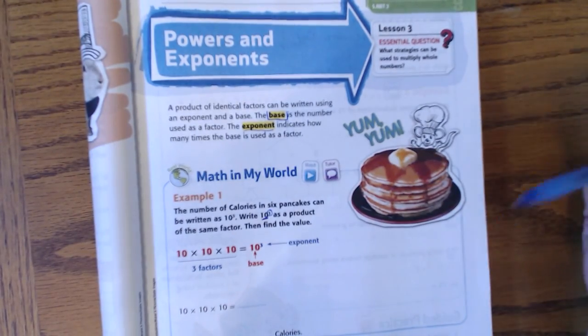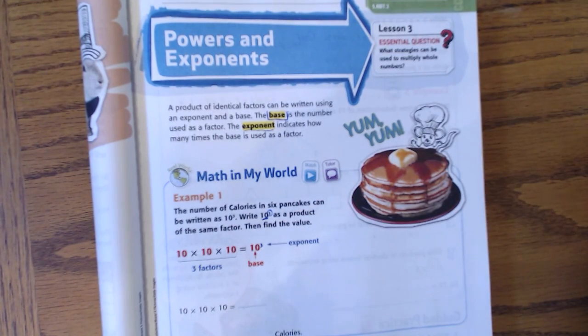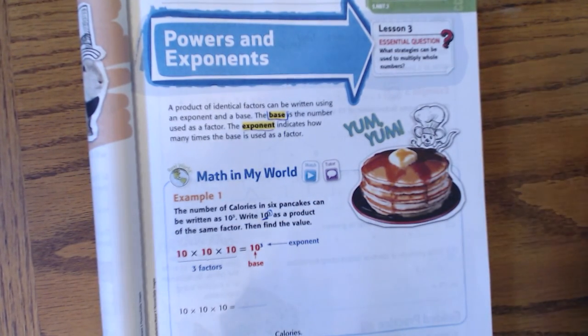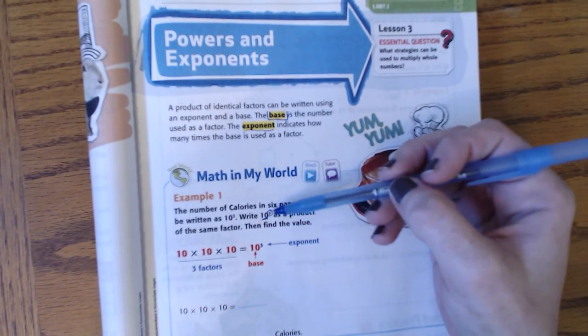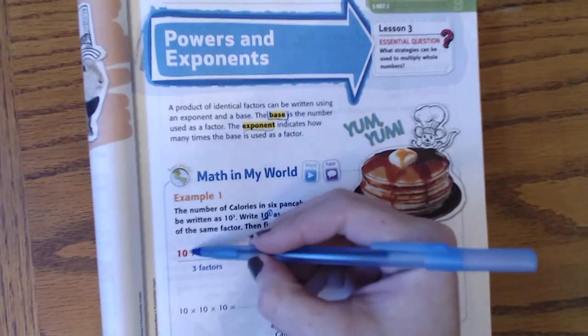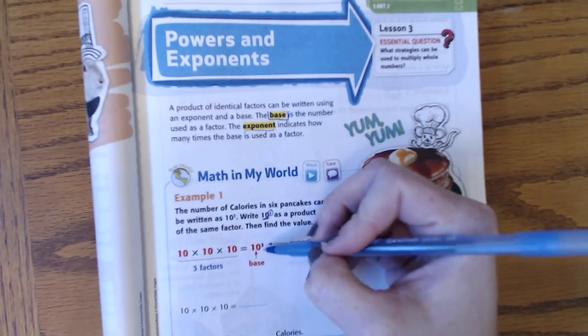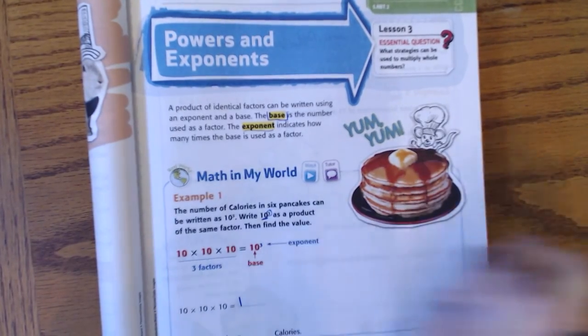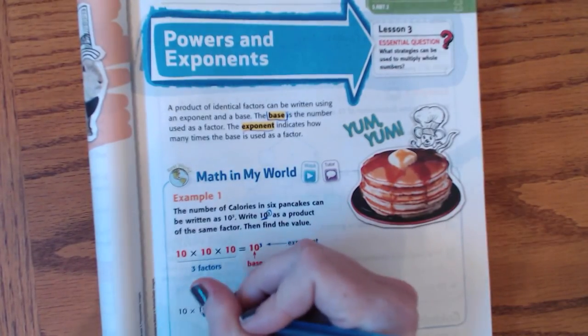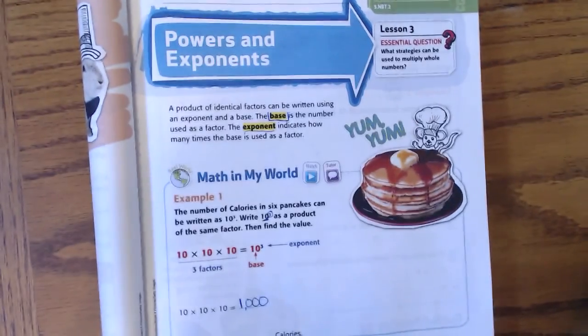So, a common mistake is, ten times ten times ten, a lot of people say, oh, it's thirty. You're adding. When you have ten to the third power, it's not ten times three. It is ten times ten times ten. And what that is is a one plus how many zeros? Three. That's actually a thousand calories.